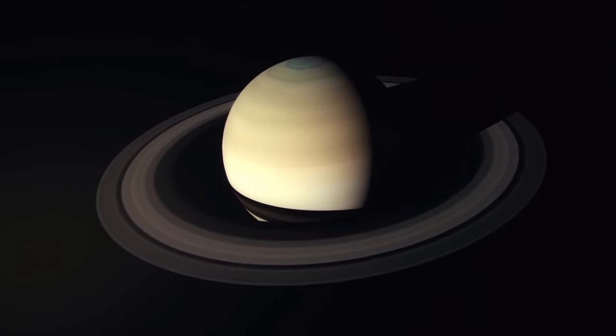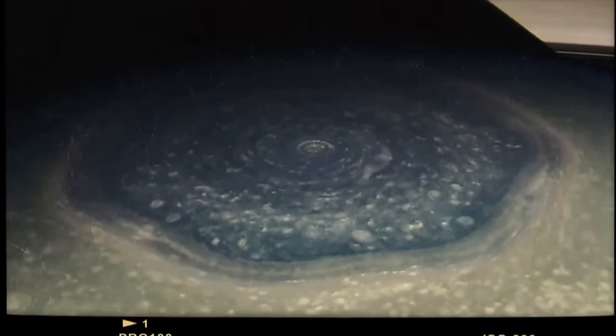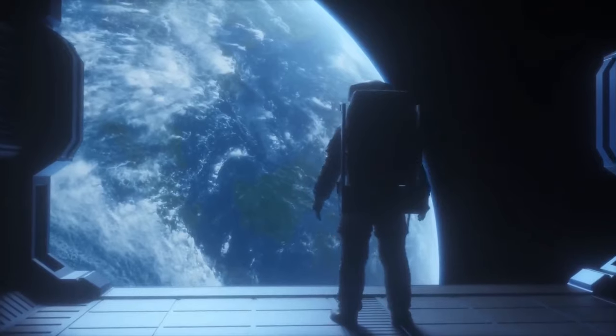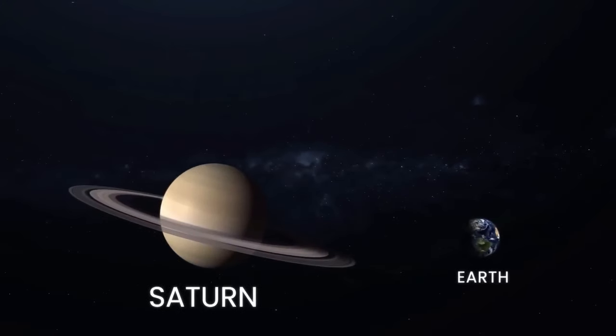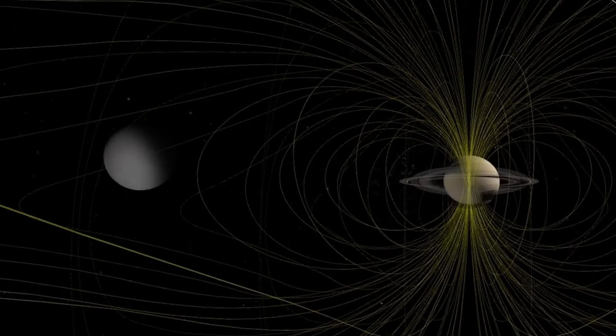Another intriguing idea suggests that the rings could be the remnants of dwarf planets that met their demise in Saturn's vicinity, forming the mysterious rings encircling the gas giant. Saturn's ring system is a sight to behold, but it is also transient.